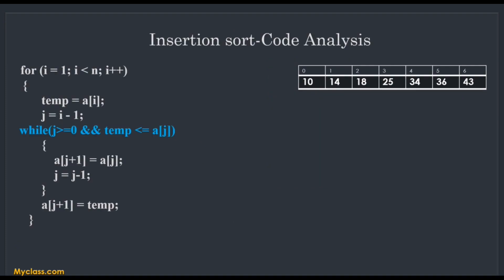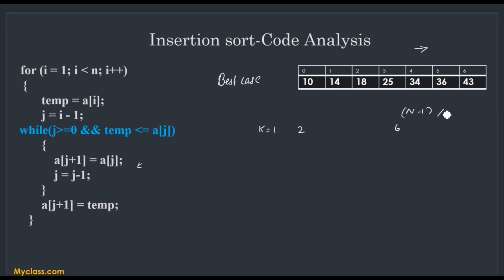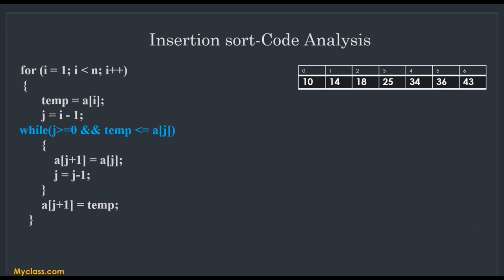Now let's analyze best and worst cases. The best case occurs when the input array is already sorted in increasing order. In this case the outer loop runs n − 1 times, but the inner loop never executes because each picked element is already greater than all elements in the sorted sub-list. So the best-case complexity is O(n).